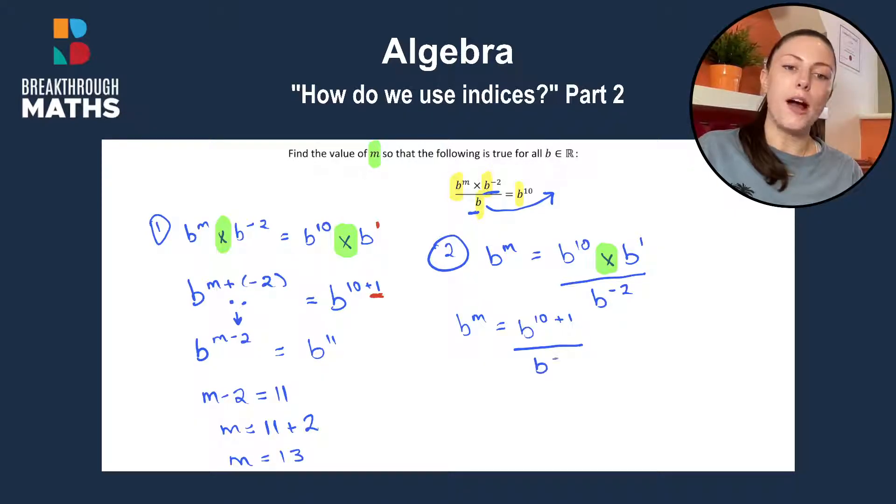divided by B to the power of minus 2. So simplifying that, we have B to the power of M is equal to B to the power of 11 divided by B to the power of minus 2.